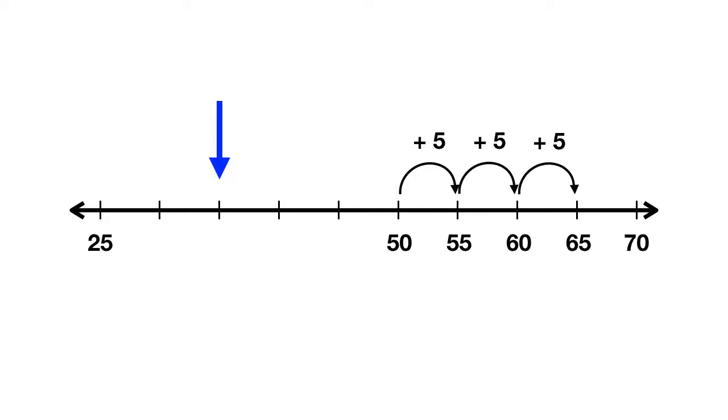So on this number line, when you move one dash to the right, you add 5 to your number. Knowing this, what do you think happens when you move one dash the other way, to the left? When you move the other way, you'll do the opposite. So instead of adding 5, we'll subtract 5. Now we're at the number 45.